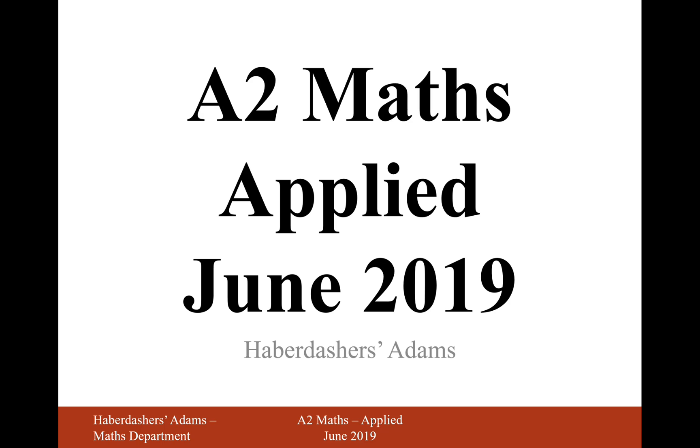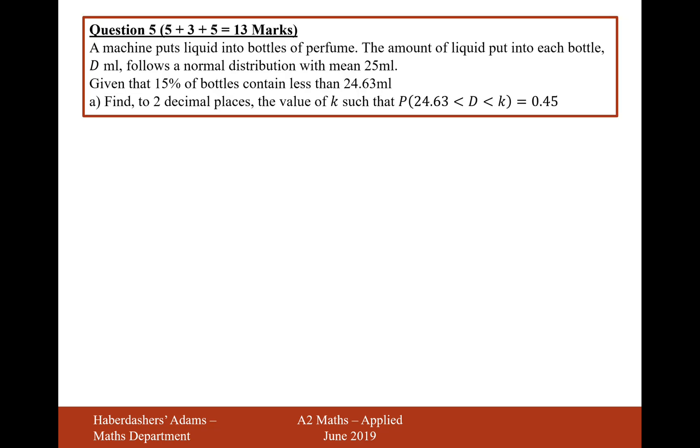Hello there, welcome to the June 2019 applied paper. Here we're looking at question 5. A machine puts liquid into bottles of perfume. The amount of liquid put into each bottle, d milliliters, follows a normal distribution with a mean of 25 milliliters. Given that 15% of bottles contain less than 24.63 milliliters, find to two decimal places the value of k such that the probability from 24.63 milliliters up to k is 0.45. So let's just draw out what we've got so far.